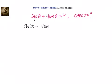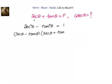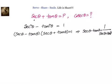The left-hand side is in the form of a squared minus b squared, so we can write it as (a minus b)(a plus b), which means the next step will be: secant theta minus tan theta, multiplied by secant theta plus tan theta, equals 1. Therefore, secant theta minus tan theta equals 1 divided by secant theta plus tan theta.